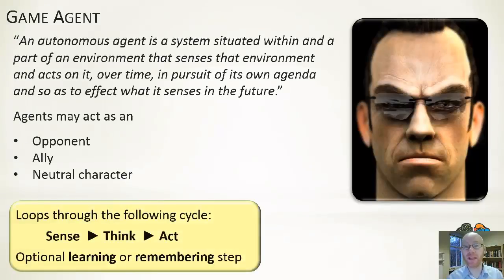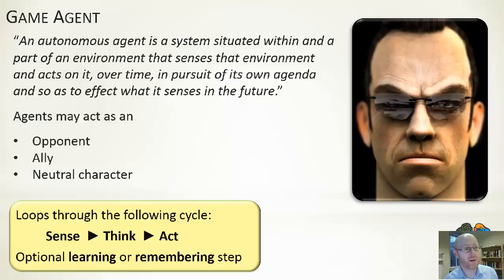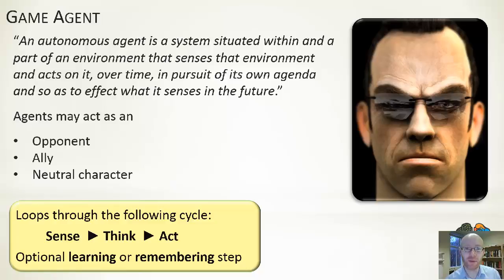I'll start off with a broad definition because the notion of an agent is from the spectrum of artificial intelligence — it's not specific to games. It refers to a particular class or category of autonomous agent, a piece of software. An autonomous agent is a system, a piece of software situated within a part of an environment that senses that environment, and then acts upon that over time in pursuit of its own agenda, so as to affect what it senses in the future. In other words, it's part of some environment, it senses that environment, it has a set of goals and takes actions to try to realize and move closer to those goals.